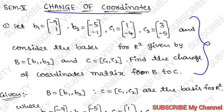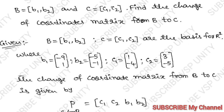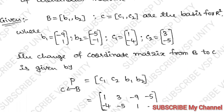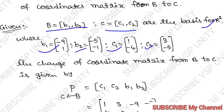This is Simple Linear Algebra, the same for all universities and all degree students. Let us start our problem. First we write the given bases: B equal to {B1, B2} and C equal to {C1, C2} are the bases for R-squared, and B1, B2, C1, C2 are given.